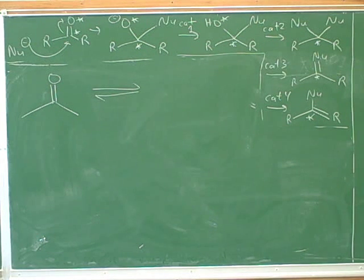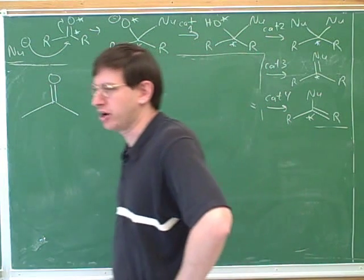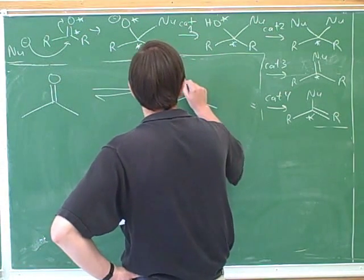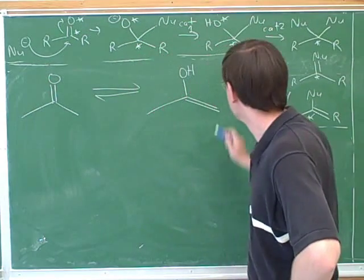Not the enolate, but the enol. What do we have to protonate first then? So let's not worry about the mechanism for a second. Let's just draw what would happen if there was a tautomerization reaction. What would the enol form look like? That's right. Here's the enol form.